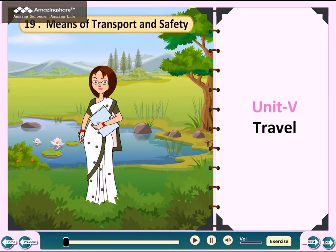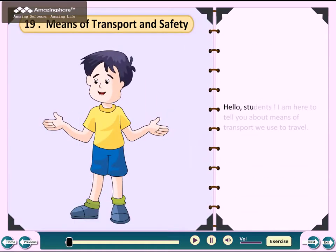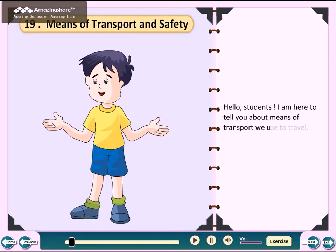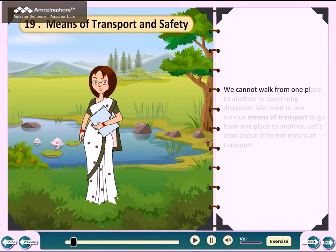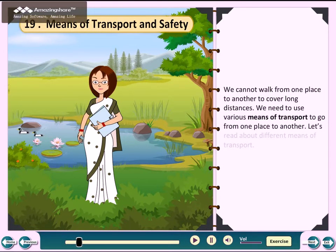Unit 5, Travel. Chapter 19: Means of Transport and Safety. Hello students, I am here to tell you about means of transport we use to travel. We cannot walk from one place to another to cover long distances. We need to use various means of transport to go from one place to another.